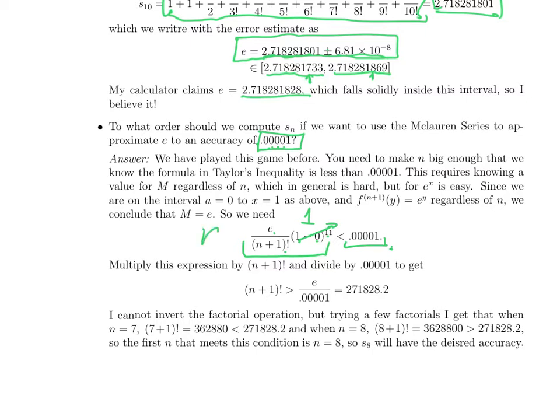How do you do that? Multiply both sides by (N+1) factorial and divide both sides by 0.00001. And that gives you (N+1) factorial has to be bigger than e over 0.00001, which is 271,000 and change. So if you could invert factorial, you'd say N+1 has to be bigger than the inverse factorial of this number. I don't know how to do that. But I can just try some N's and see what happens.